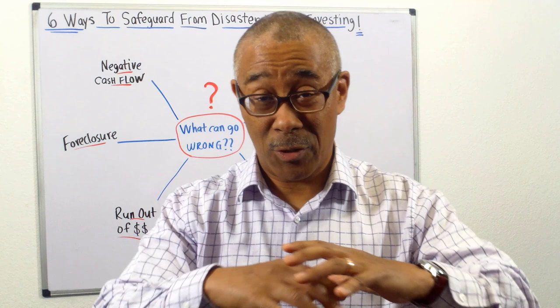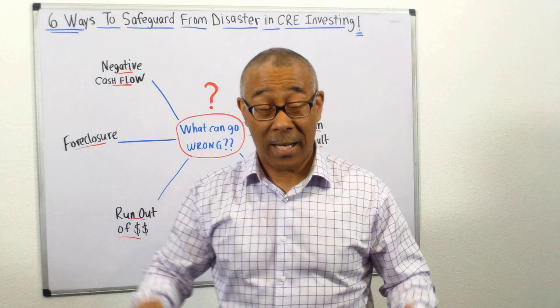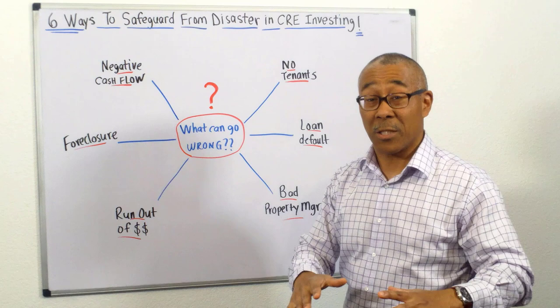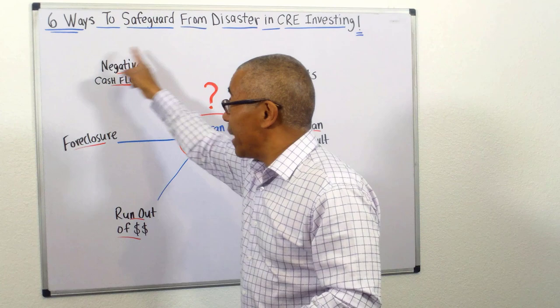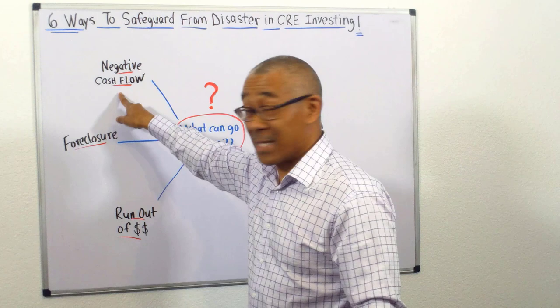So in this video, I'm going to share with you a quick overview of what can go wrong, and then I'm going to give you six ways to safeguard from disaster in commercial real estate investing. Let's get started. Number one is you don't want to experience negative cash flows — not a good feeling, and it defeats the purpose of investing. There are many things that can cause you to go into negative cash flow, and I will give you a remedy to make sure that doesn't happen.